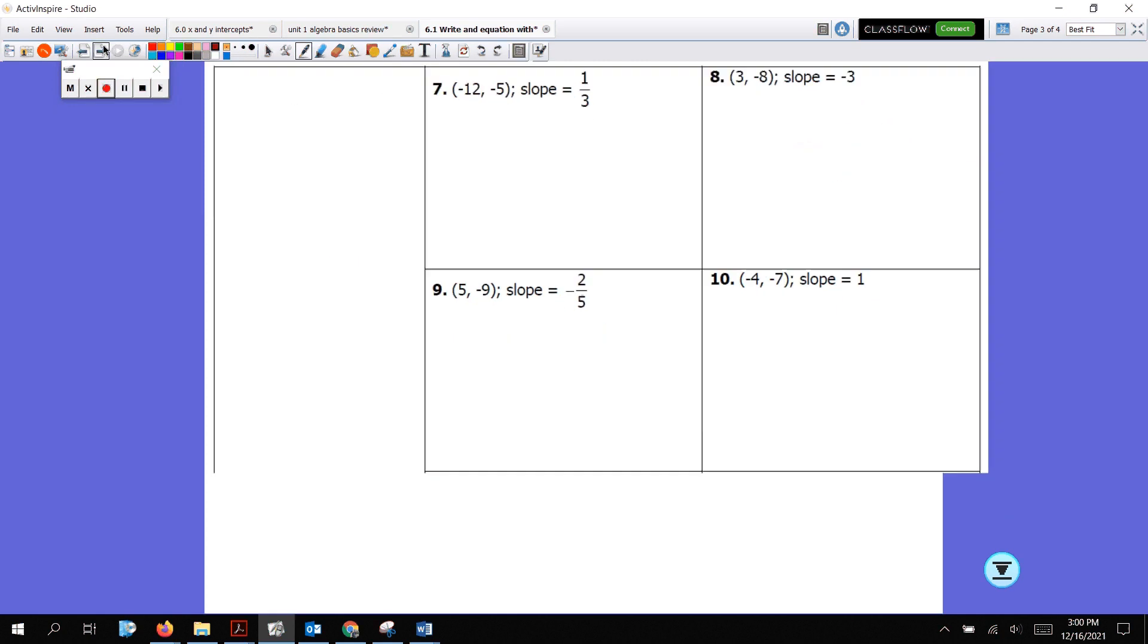All right. So we just have some more practice here. So let's do this one together. So for number 7, this is my x1, my y1, and my m. y minus negative is y plus 5. If it's a negative, just change it to addition. Equals 1 third x minus negative 12, which is plus 12. All right. Now we need to distribute. 1 third x. 1 third times 12 is 4. It's really like 12 divided by 3, right? And then I still have y plus 5 on the other side. If I subtract 5 from both sides, it gives me y equals 1 third x minus 1.